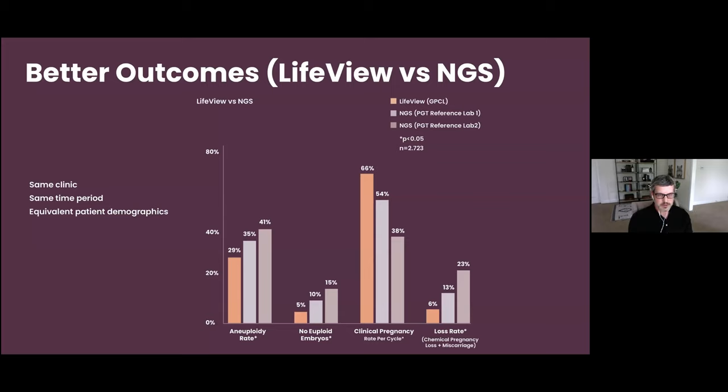And when we do that, we actually do see a significantly different performance in a clinical setting. This was a study performed by one of our clients where they were sending biopsies to three different laboratories in parallel. The patient demographics were equivalent. It was the same time period. And what you can see is a significantly lower aneuploidy rate with LifeView compared to next-gen, and that leads to also significantly fewer cycles with no euploid embryos available for transfer. We also see a significantly increased clinical pregnancy rate per cycle and a significantly lower clinical loss rate. I think this is really what most providers care about—the actual performance in a clinical setting. So using LifeView provides significantly better outcomes compared to conventional next-generation sequencing.